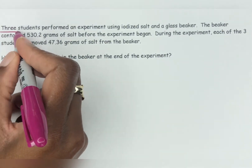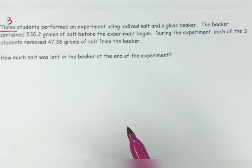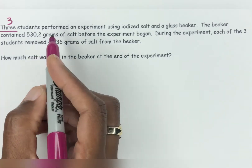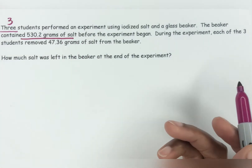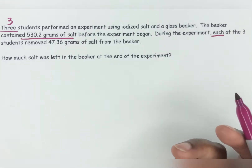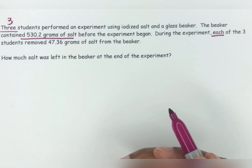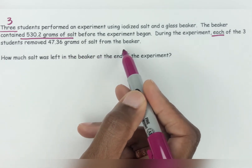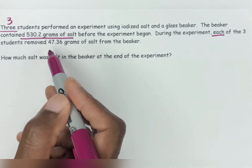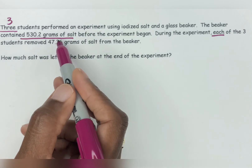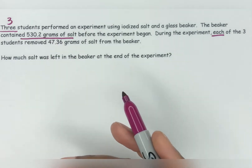Okay, so here again you can see they put three in words, so we need to make sure our brain picks that up — it's three students. Now, while they were doing the experiment, each of the three students — remember, 'each' always means multiplication or division, it never means add or subtract. So each of the three students removed 47.36 grams of salt. The best thing to do is to do 47.36 times 3, because that would be the total from the three students.